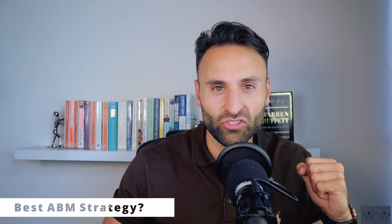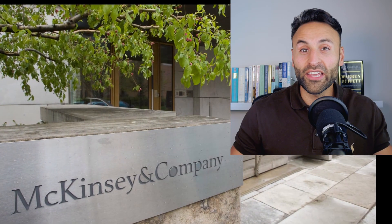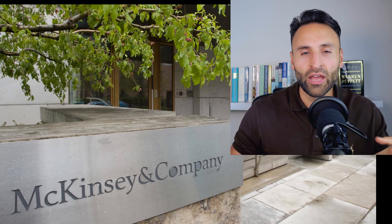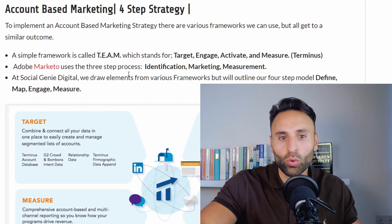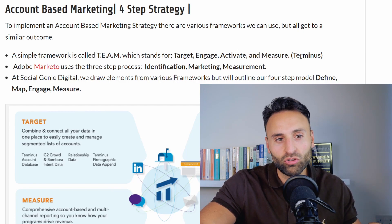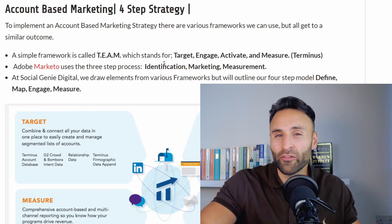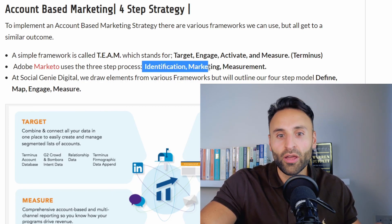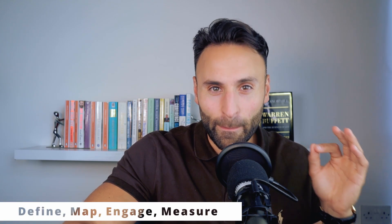What is the best account-based marketing strategy to use? At Social Genie, I've personally studied all the different ABM strategies, from what they use at leading consultancies like McKinsey and Bain to what they use at Adobe with their Marketo Engage platform. A simple framework is called TEAM — Target, Engage, Activate, and Measure — by Terminus. Adobe Marketo uses Identification, Marketing, and Measurement. At Social Genie Digital, I've developed our own four-step model: Define, Map, Engage, and Measure.